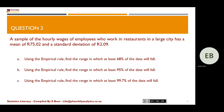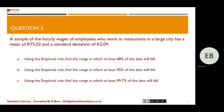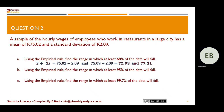Question number two: a sample of hourly wages of employees who work in a restaurant in a large city has a mean of 75.02 and a standard deviation of 2.09. Parts a, b, and c all say: using the empirical rule, find the range in which at least 68%, 95%, and 99.7% of the data will fall. You can pause the video and answer it yourself. For one standard deviation, the data falls within 72.93 and 77.11.